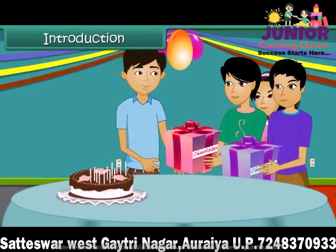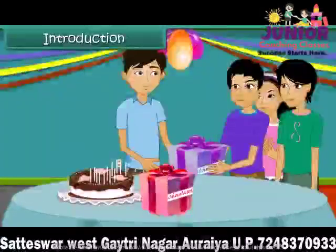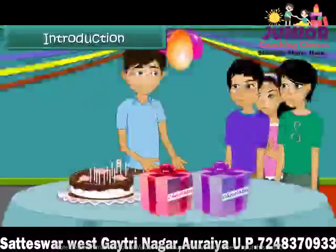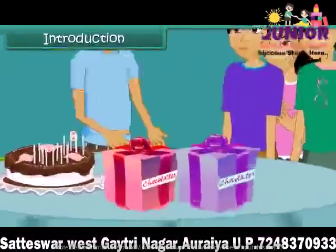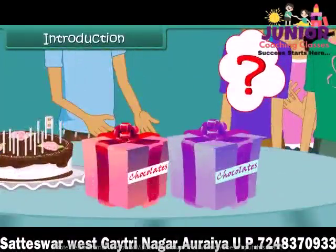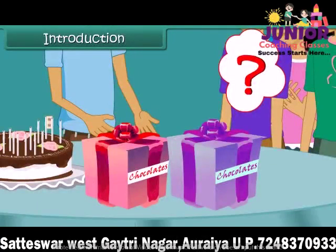On your birthday, one of your friends gives a box of chocolates. Another friend gives another box of chocolates as a birthday gift. So now, how many chocolates will you have? Without opening the box, we cannot find the total number of chocolates. In these cases, we use variables for the unknown number of chocolates. By solving the equation formed, we can find the number of chocolates, which is the unknown.